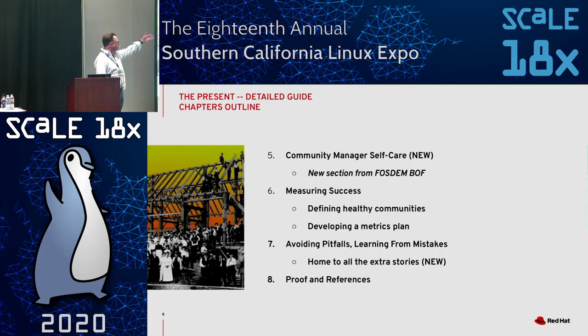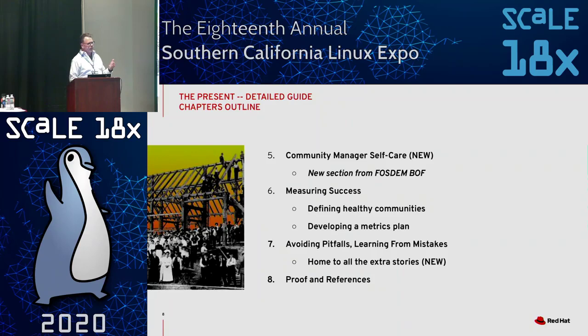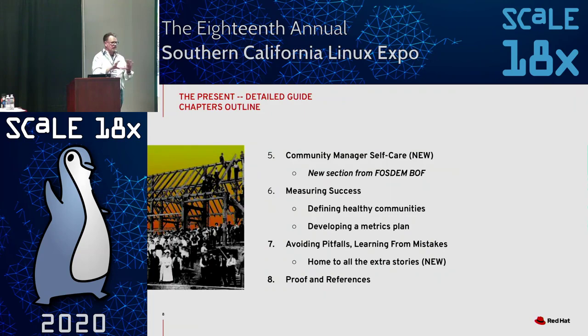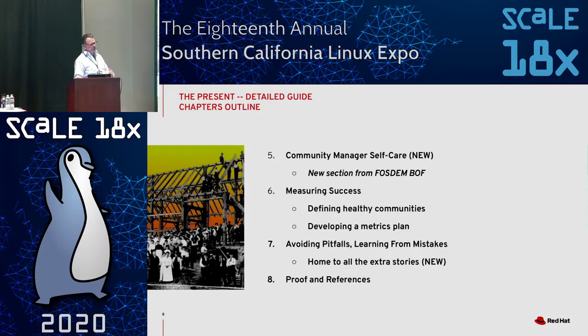Here's the community manager self-care section — finding healthy communities and developing a metrics plan. That's the way our team looks at measuring what's going on in a community: have an idea of what healthy means versus not healthy in that context, then figure out how you're going to measure it. With a human you've got body temperature, are your cheeks flushed, are you coughing — what's the equivalent with a community? And then proof and references: source material we want to point to so we're not duplicating things, and what the community recommends as the best references.